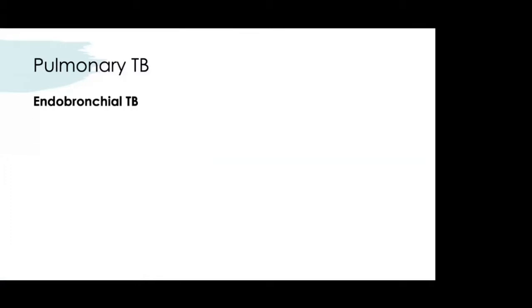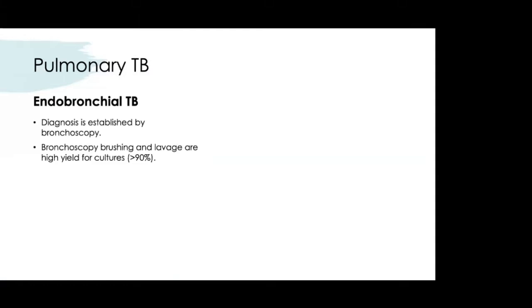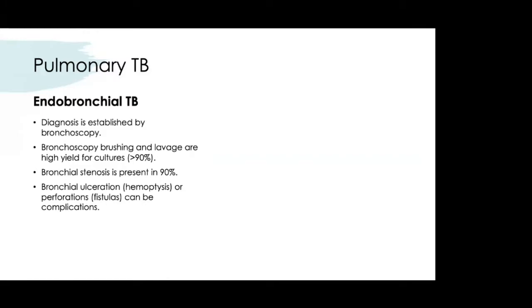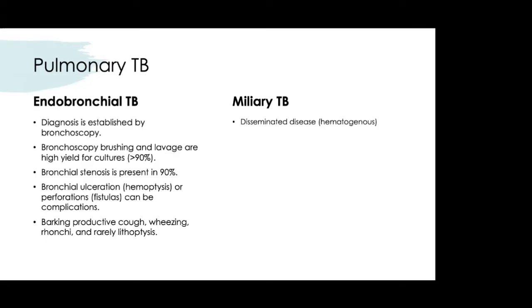Endobronchial TB is diagnosed by bronchoscopy, with brushings and lavage being high yield for AFB cultures. You may see bronchial stenosis, bronchial ulceration causing hemoptysis, and rarely fistulas from perforations. Patients typically have a barking productive cough, wheezing, and rhonchi.